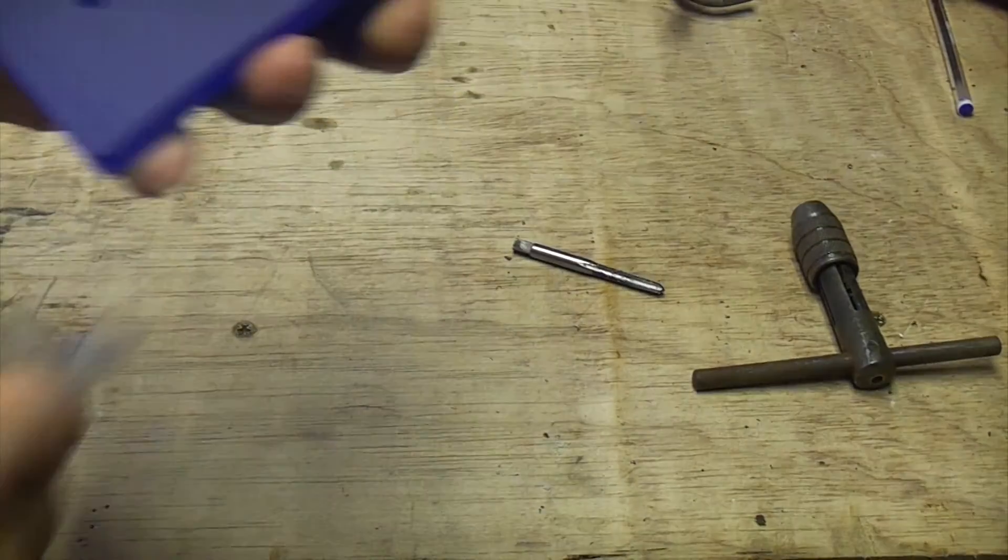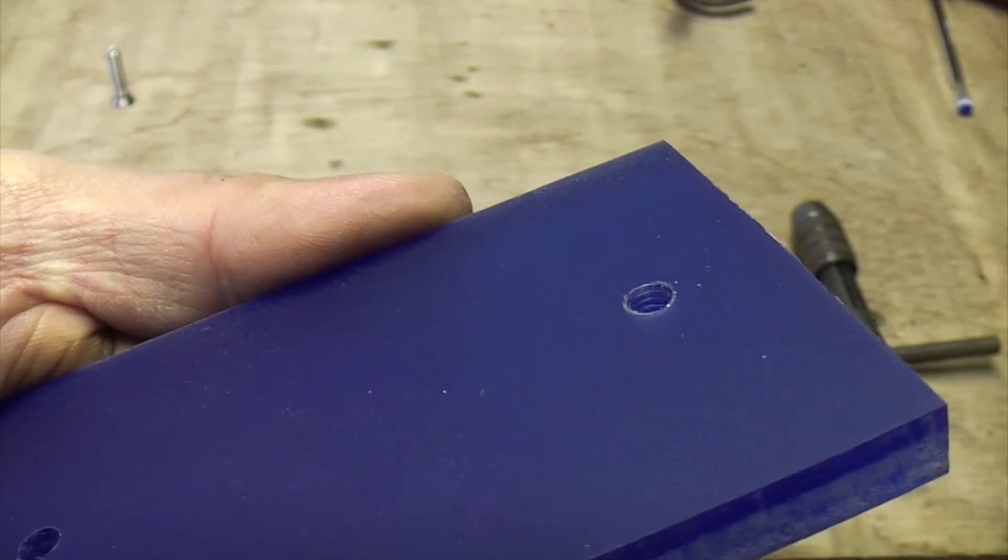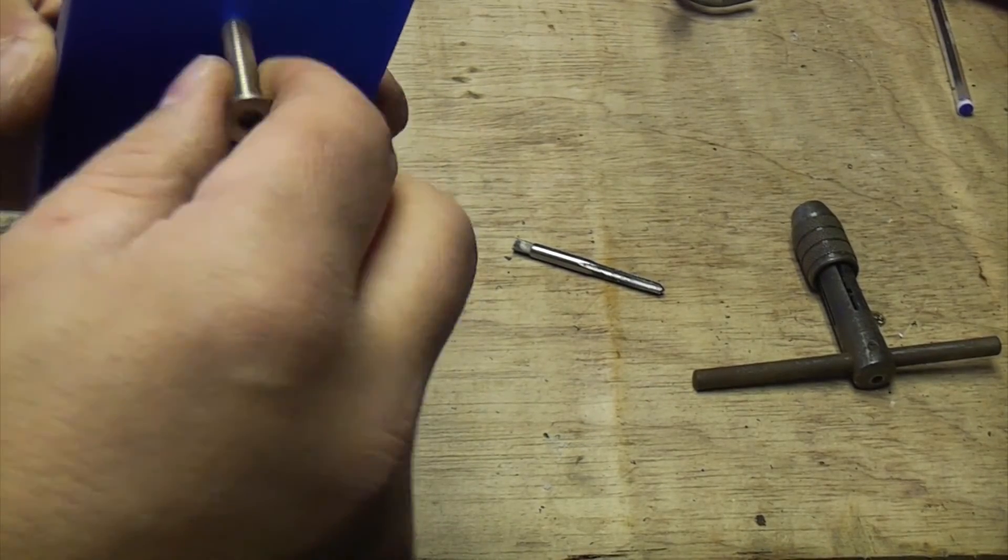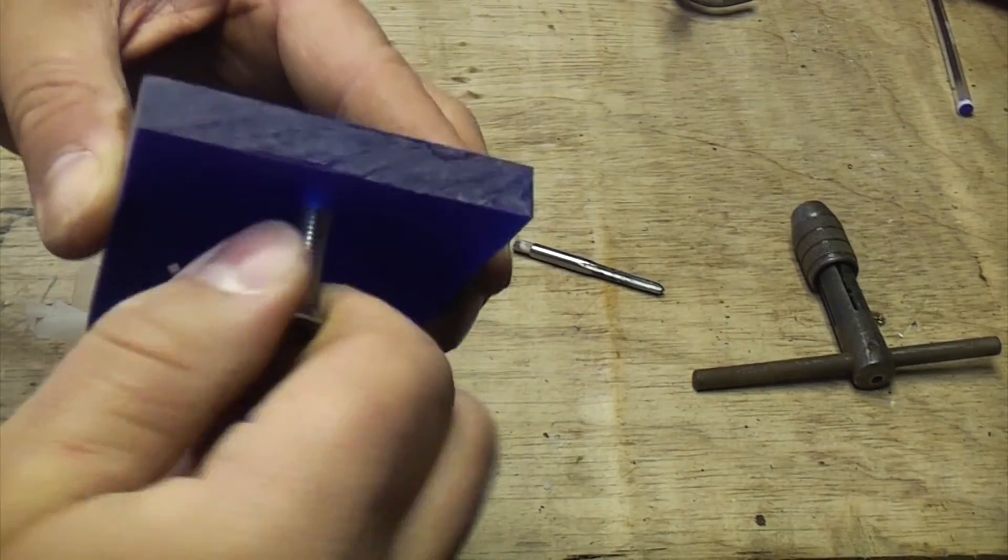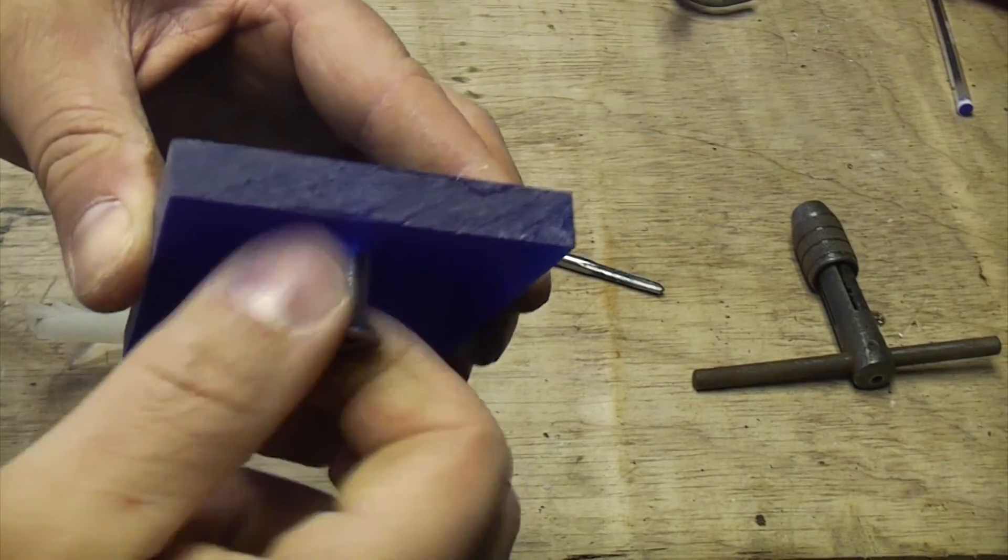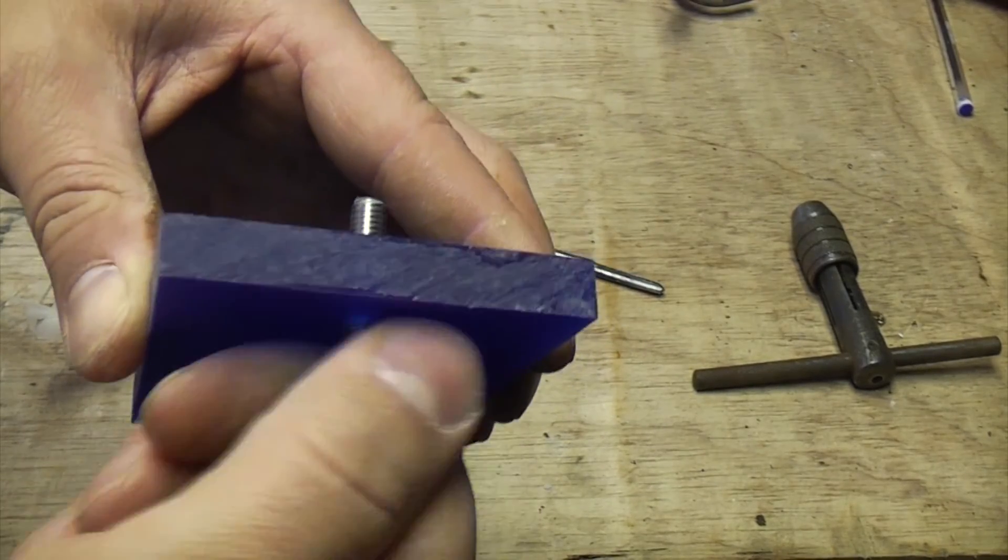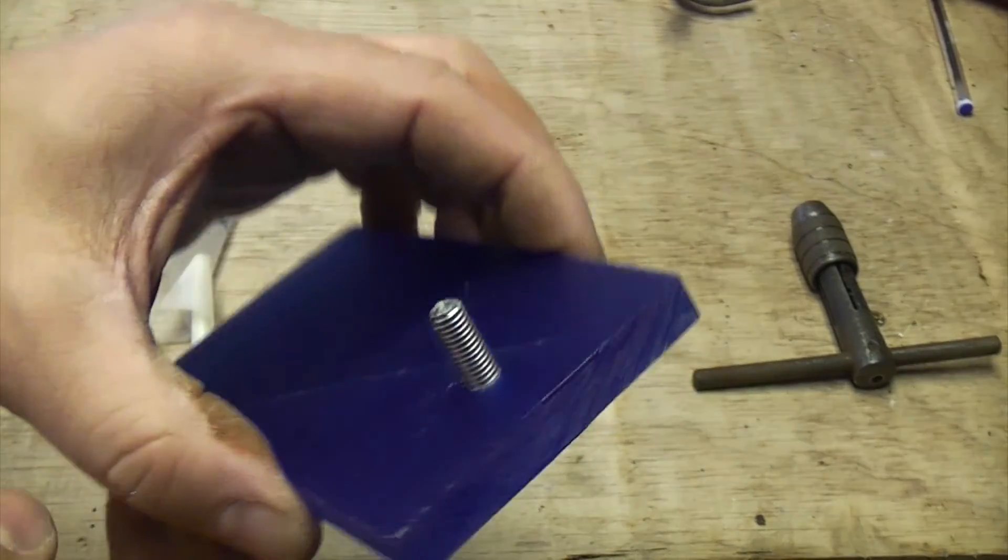I'll just remove the masking and you can just about see there that that hole is actually threaded now. If we take our screw that we had earlier and we can screw that straight in there. So that's how to tap perspex.